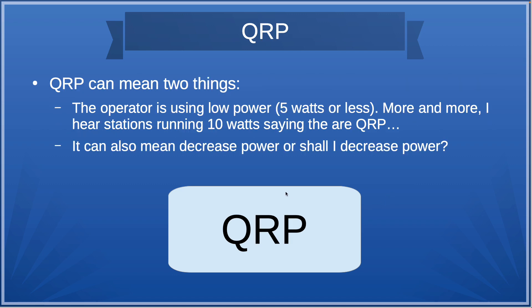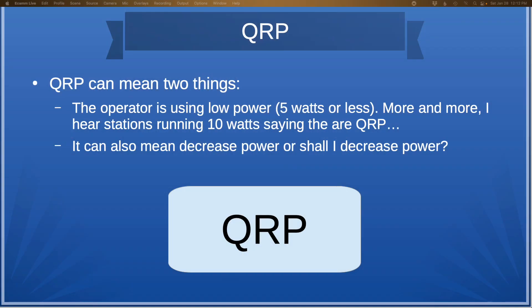QRP can mean a couple of different things. The operator is using low power — that is, 5 watts or less. More and more, I do hear stations running 10 watts saying they're QRP. The differentiator there would be 10 watts for single sideband versus 5 watts for CW or another digital mode. It can also mean "shall I decrease my power" — more in the CW world. But QRP, low power, that's what that means.